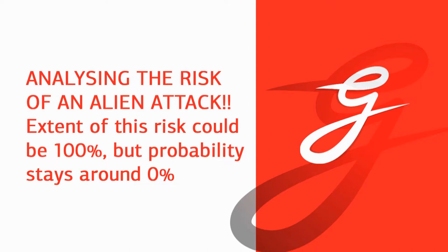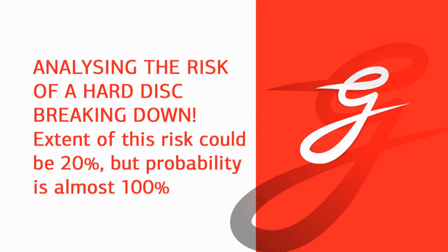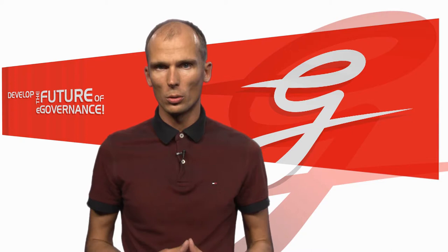Consider an alien invasion that destroys all our data. The extent of this risk is almost 100 percent because all our data would be destroyed. While the probability of this risk is very very low — almost zero. Now let's take the other example risk: the risk of a hard disk breaking down. The extent of this risk is relatively low, maybe 20 percent, because we only have a reasonably small amount of our holdings stored on one single hard disk. While the probability is almost 100 percent, because during a single year of operations we are almost sure to encounter at least one broken hard disk. So how do we compare those two risks?